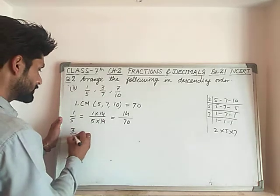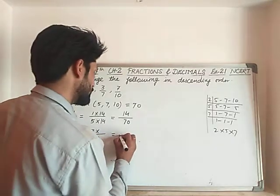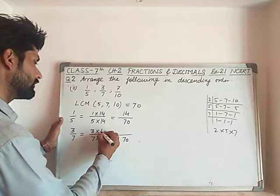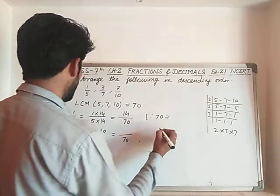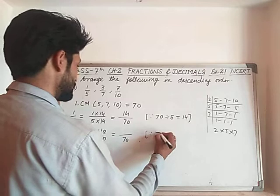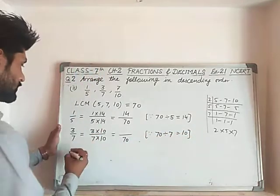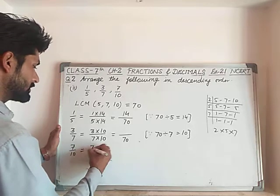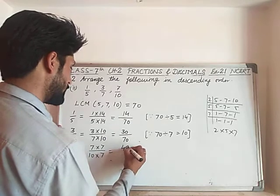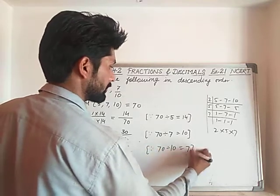For 7 upon 10: we divide 70 by 10 to get 7, and multiply 7 by 7, giving 49 upon 70. So our three converted fractions are 14 upon 70, 30 upon 70, and 49 upon 70.